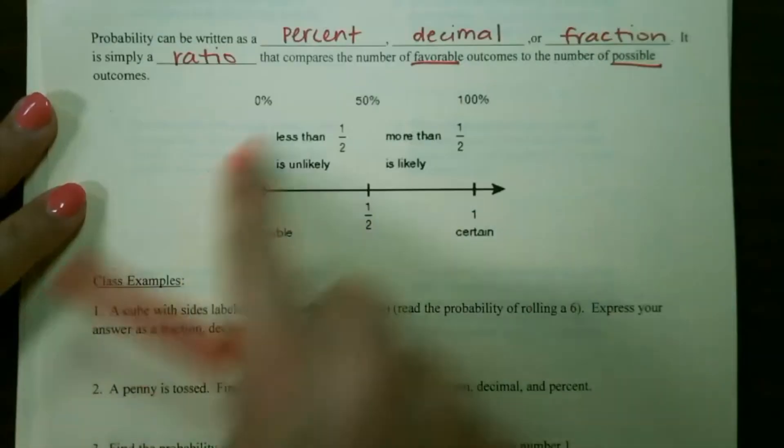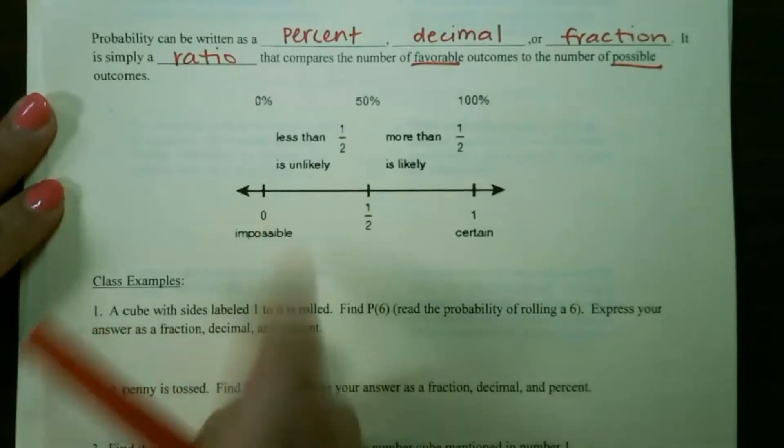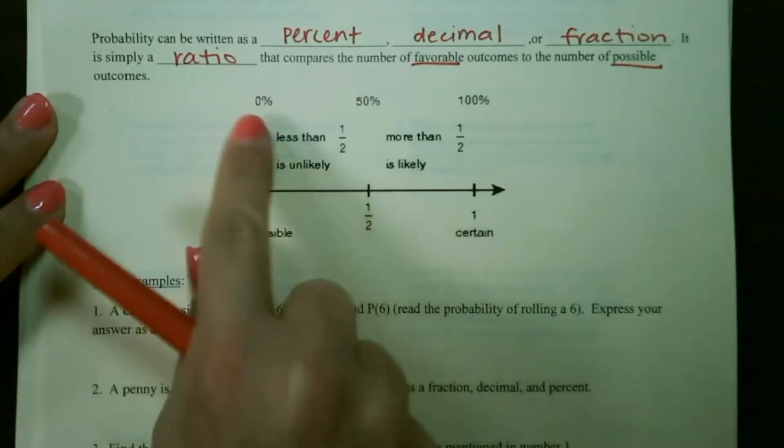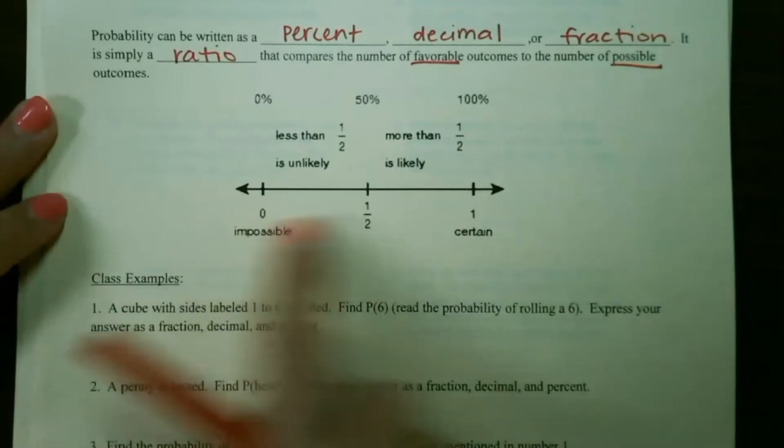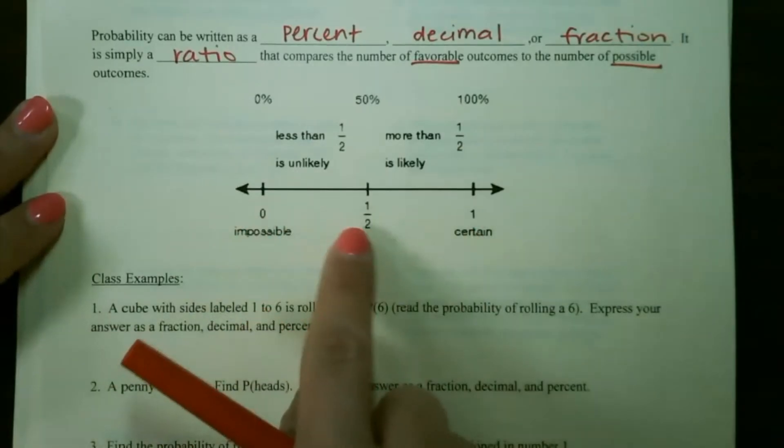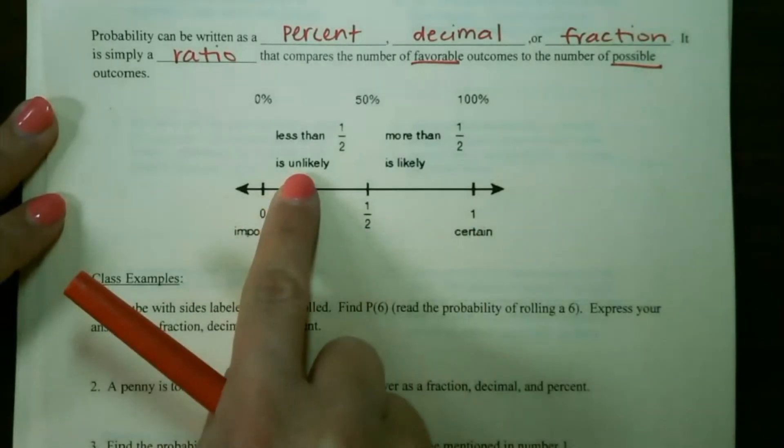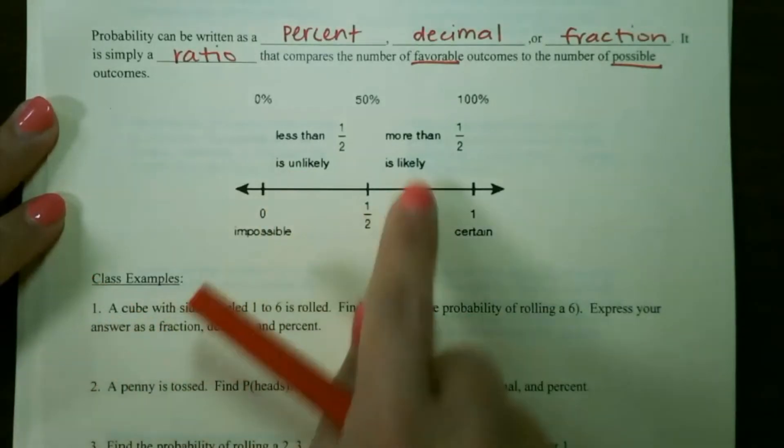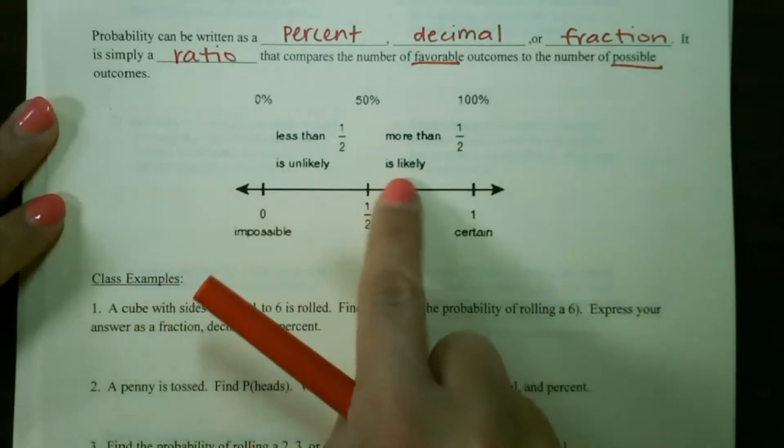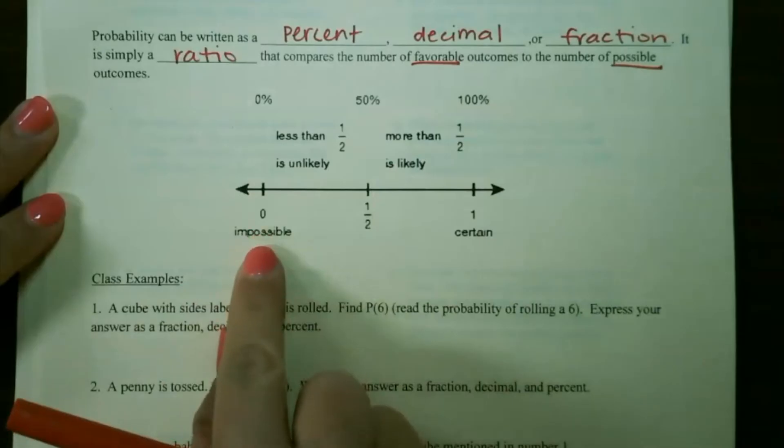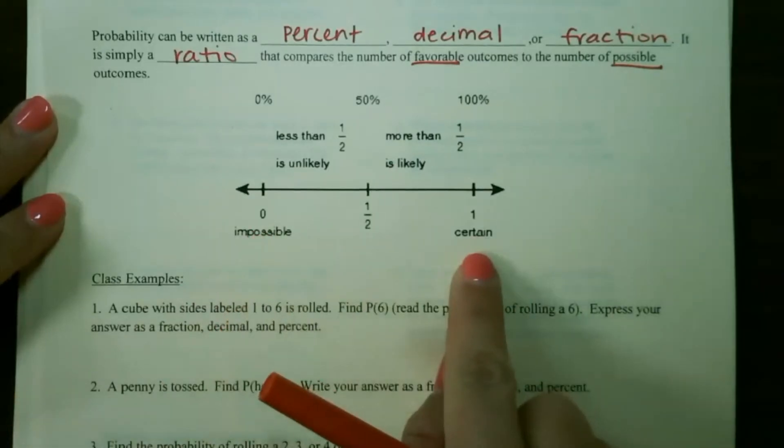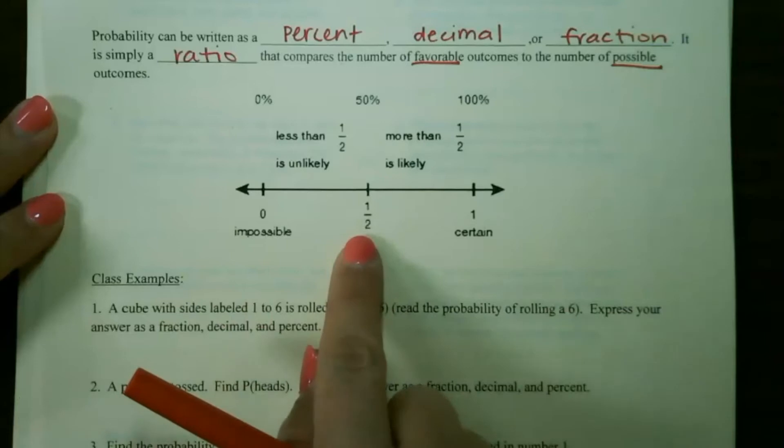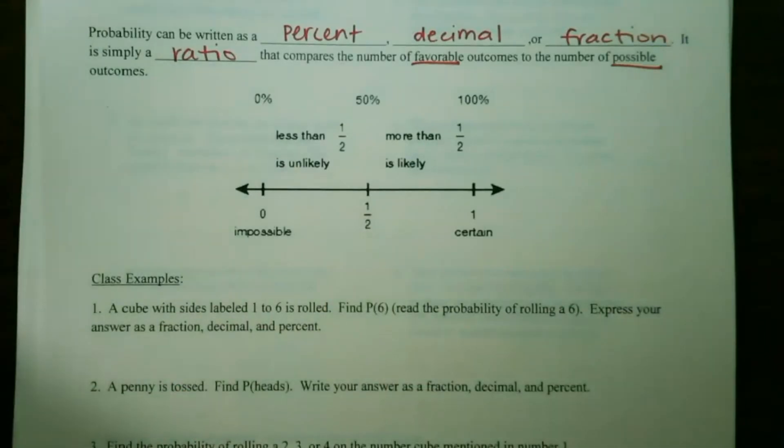This is our scale of probability outcomes. Since we're using fractions or percents, they are usually from 0 to 1. Anything that is less than 1 half is going to be unlikely to occur. Anything that is more than 1 half is likely to occur. If it's 0, it's impossible, and with 1 being certain, anything that's right at 1 half has equal outcomes or equal chances to occur.